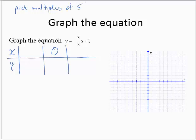Why? It makes the arithmetic easy. So I'm going to pick negative 5 and positive 5. All right, so if x equals negative 5, y would equal negative 3 fifths of negative 5 plus 1. Negative 3 fifths of negative 5 would be positive 3. And 3 plus 1 is 4.